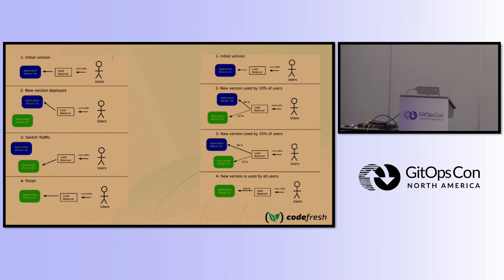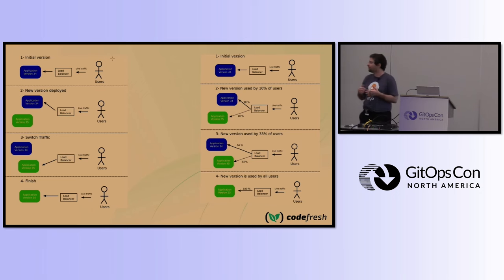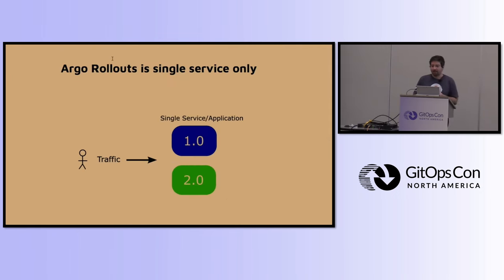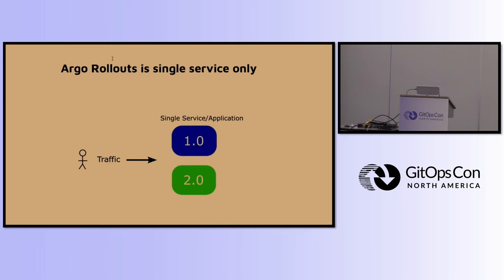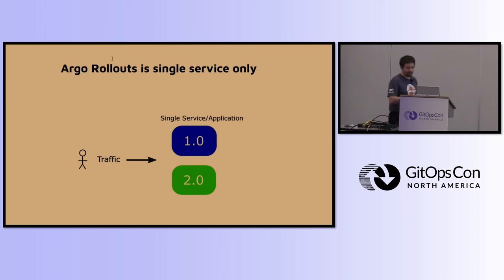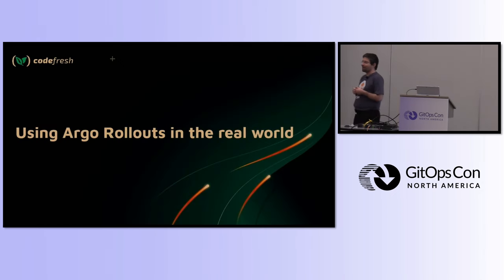Progressive delivery means different things to different people. For this presentation: blue-green means you have an application running, you create a brand new version, test it without affecting production, and then promote to switch traffic. Canary is smarter — you gradually shift traffic: 10%, 20%, and when you're confident you promote everything. People say Argo Rollouts is the best project ever — but they quickly find out it's centered on a single application or single service.